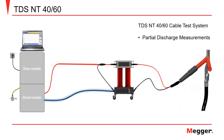Next, the high voltage return is connected to the grounding connection on the PDS-60. The high voltage output of the PDS-60 and the ground on the output side of the coupler are then connected to the cable to be tested.